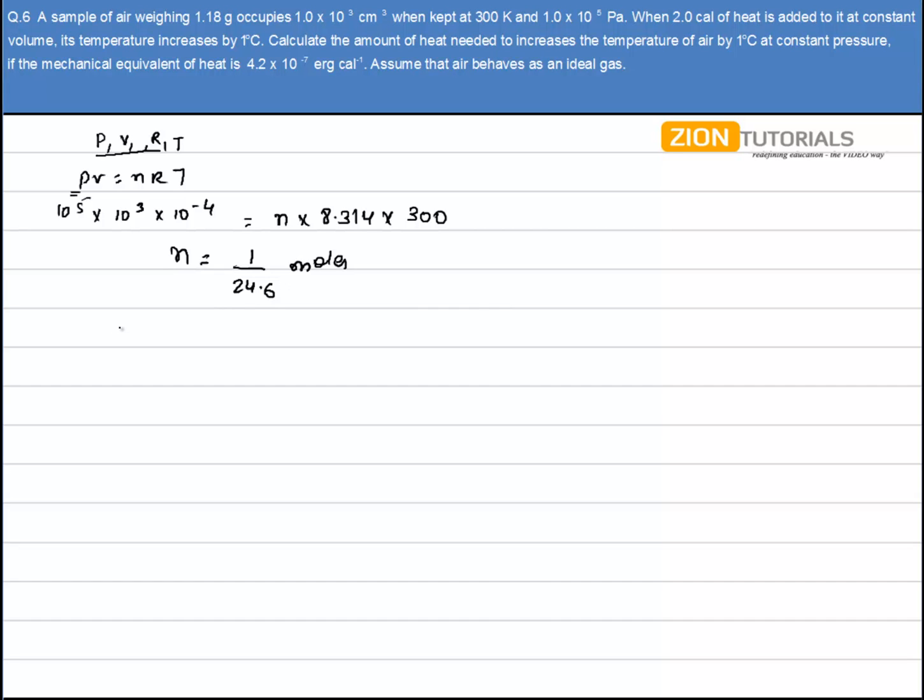Now it is given that 2 kcal of heat is added to it at constant volume and the temperature increases by 1 degree Celsius. So we know Q = n Cv ΔT, that is at constant volume. Q is 2 calories.